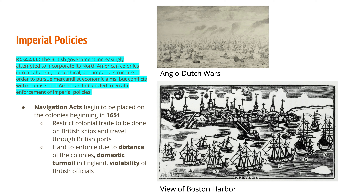Moving on to imperial policies — this is where we talk more about mercantilism. The British government increasingly attempted to incorporate its North American colonies into a coherent, hierarchical, imperial structure to pursue mercantilist economic aims. Conflicts with colonists and American Indians led to erratic enforcement of imperial policies. The first imperial policy was the Navigation Acts — restrictions on where colonial goods could go and on what ships they could travel.